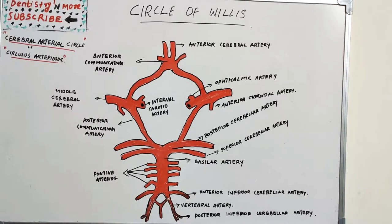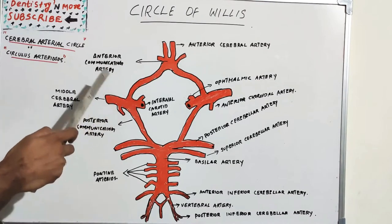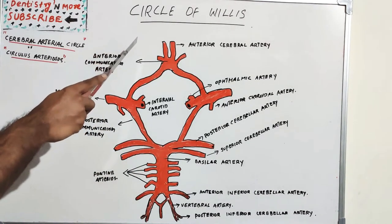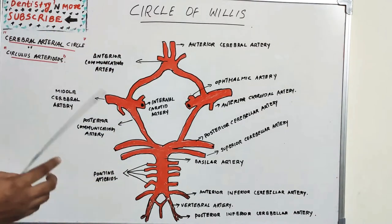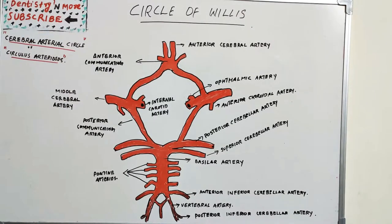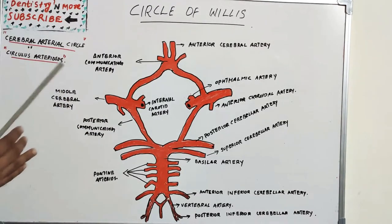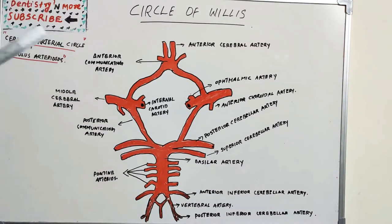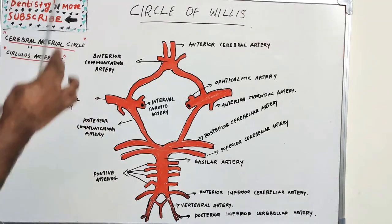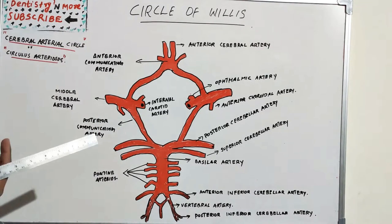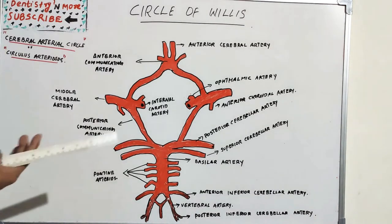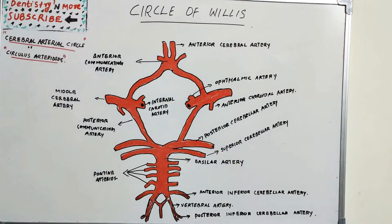The main function of the Circle of Willis is to provide collateral blood flow between the anterior and posterior arterial systems of the brain. In addition, it offers alternate blood flow pathways between the right and left cerebral hemispheres.